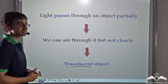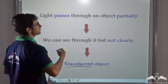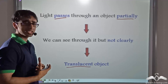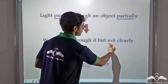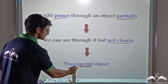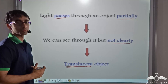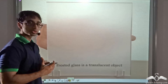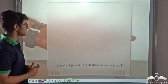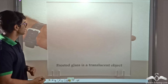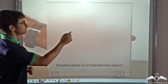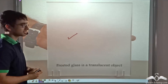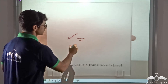It is a translucent object. Objects through which light passes only partially, and through which we can see not as clearly as we could through transparent objects, are known as translucent objects. So frosted glass is a translucent object. In this picture, you will notice that the hand of the man is very clearly visible when the translucent object — the frosted glass — is not kept. But behind the frosted glass, his hand is somewhat visible, not clearly visible.